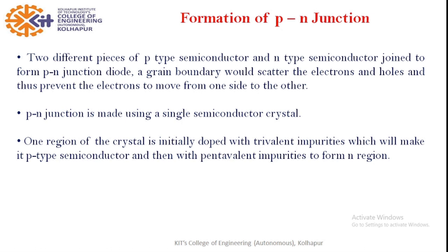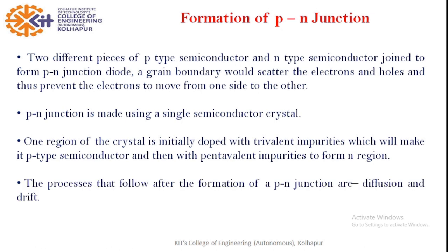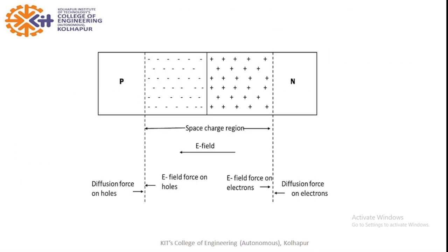When the junction is formed, there is transfer of both majority and minority carriers, forming diffusion current and drift current. Diffusion current is due to concentration gradient, and drift current is due to potential gradient.